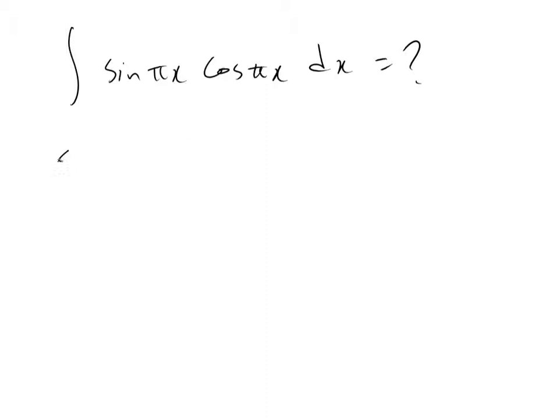From trigonometry we know that sine theta times cosine theta is equal to 1 divided by 2 sine 2 theta.